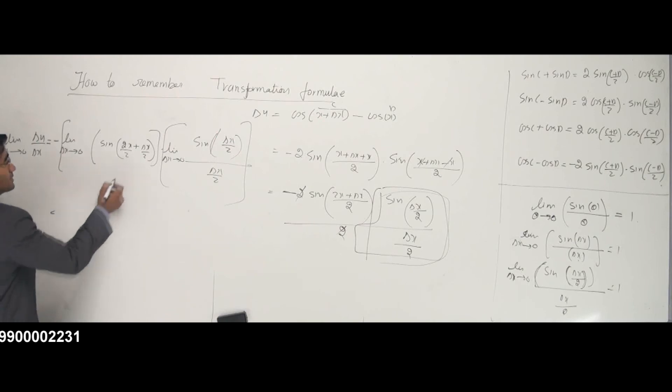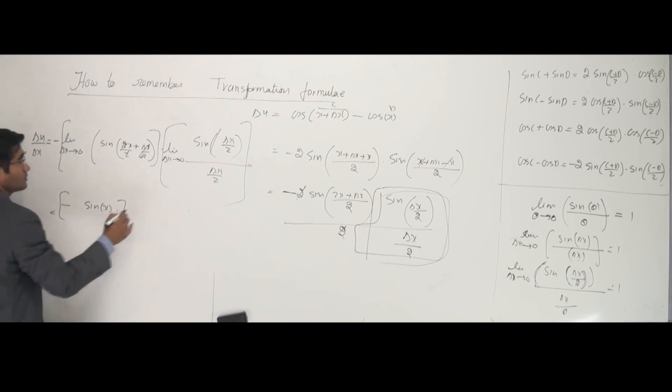If I apply the limits, I can see that this becomes 0, so I get minus sine x times this whole thing, which is 1. So that's minus sine x.